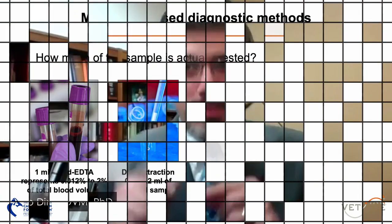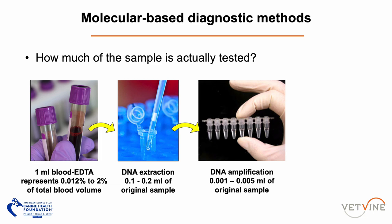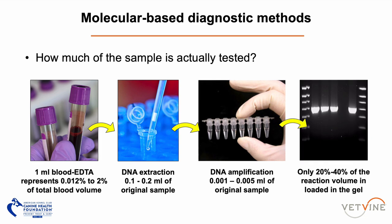From those 100 to 200 microliters, we only use 1 to 5 microliters of the original sample for the PCR testing. We then run a gel — these are examples of positive PCRs for vector-borne pathogens — where we load up some of that amplified DNA to see under UV light. So in total, we tested between 1 and 5 microliters, which is actually about one-tenth of a drop of blood.